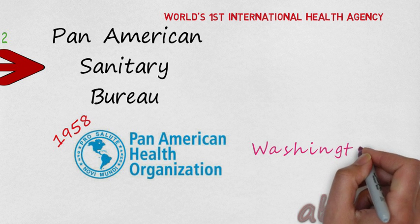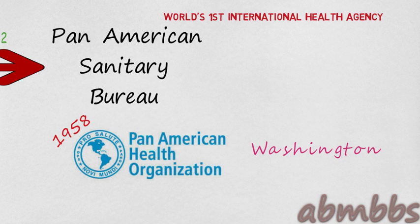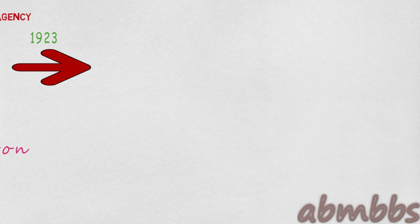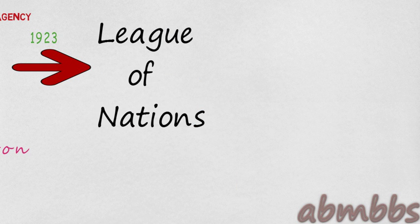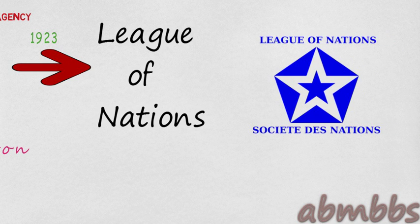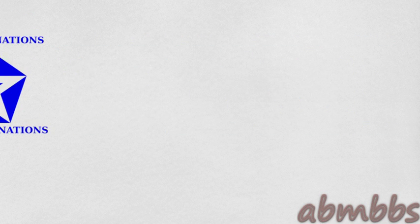It was later renamed Pan American Health Organization in 1958. Its headquarters is in Washington, DC. After the First World War, the Health Wing of the League of Nations was set up in 1923.